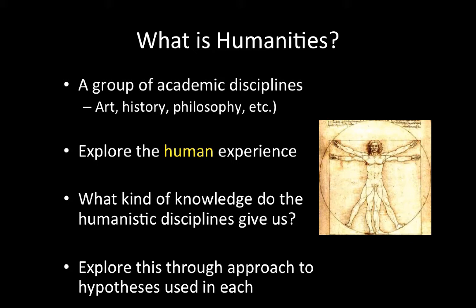The humanities are a group of academic disciplines. We have art, history, philosophy, philology — the study of languages — the classics, such as Greek and Latin, linguistics, and law, which also moves into the social sciences. The way I'm going to discuss these disciplines is that they study the human experience.